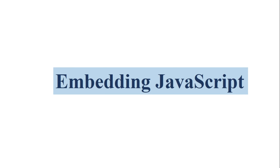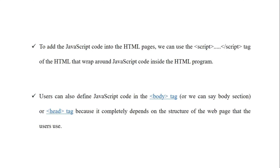Today we are going to discuss what is meant by embedding JavaScript and see an example. To add JavaScript code into an HTML page we can use the script tag. In inline JavaScript we don't need the script tag — we directly write the code inside the body tag. But in embedding JavaScript we use the opening and closing script tags to wrap JavaScript code inside the HTML program. The user can define JavaScript code in the body tag or in the head tag, depending on the structure of the web page.